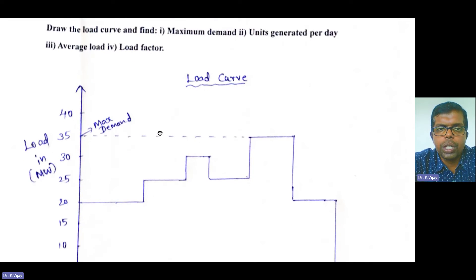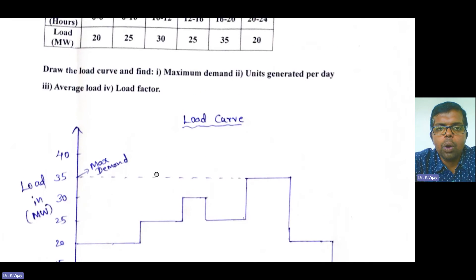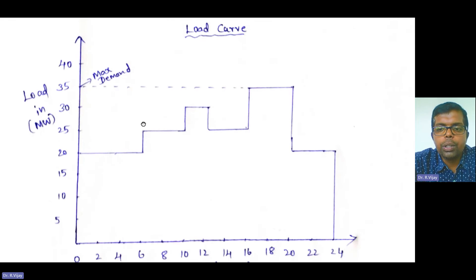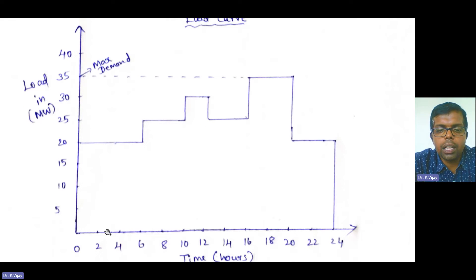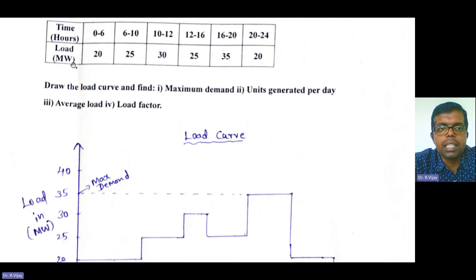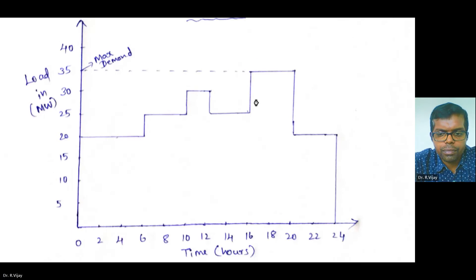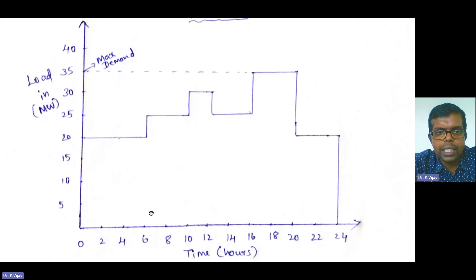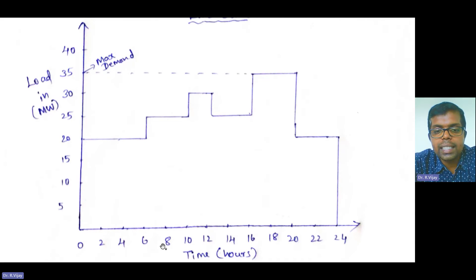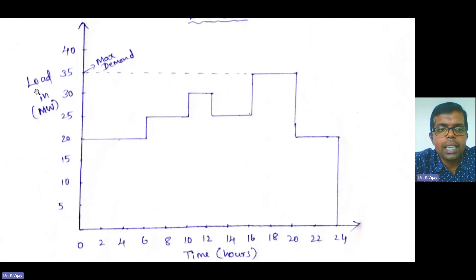First, we need to draw the load curve, which is very simple. Mark the time hours given in the problem on the x-axis. Generally, you take a 2-to-2 scale: 0, 2, 4, 6, 8, 10, 12, 14, 16, 18, 20, 22, 24. These are the timing hours. The x-axis is the time scale and the y-axis is the load axis in megawatt.